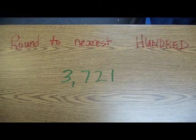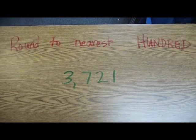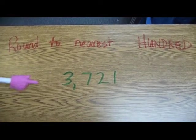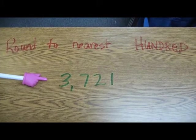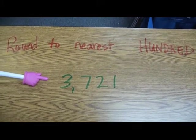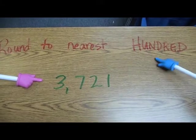Sometimes rounding can be tricky. For example, here's a four-digit number: 3,721. And we're going to round it to the nearest hundred.